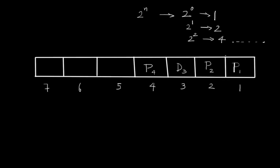At fifth position we would again have a data. At sixth position we will again have a data bit, and at seventh position we would again have one data bit.